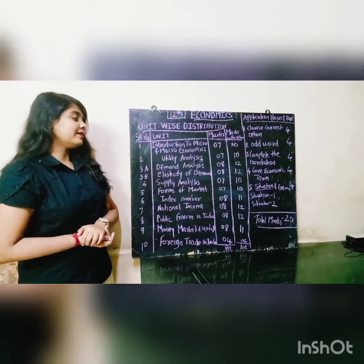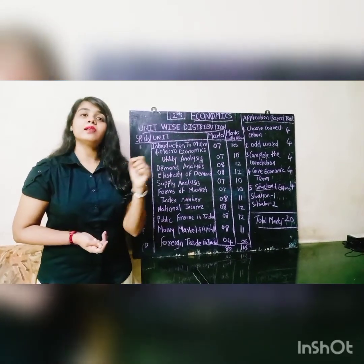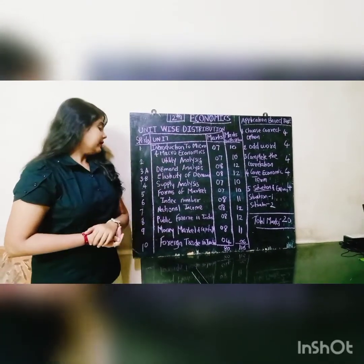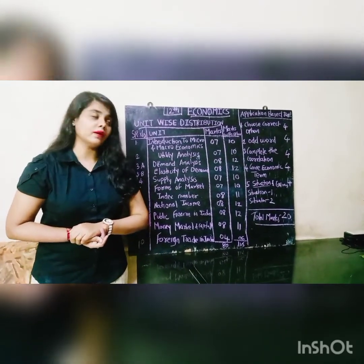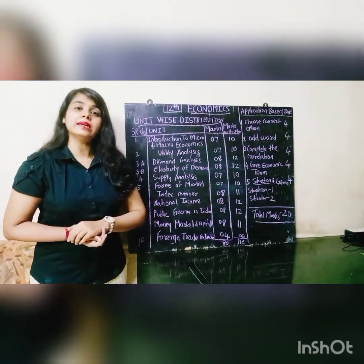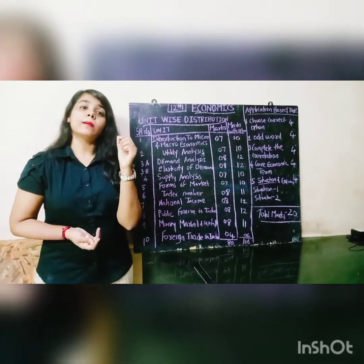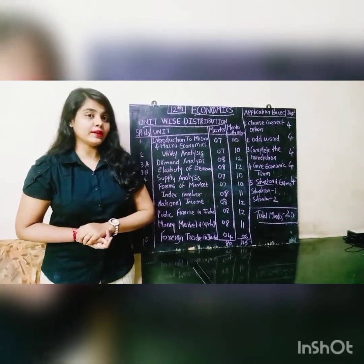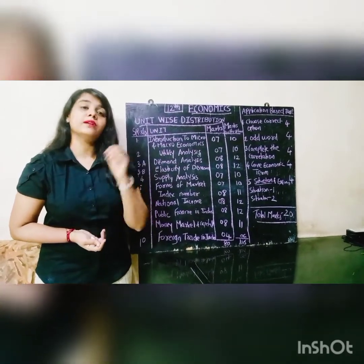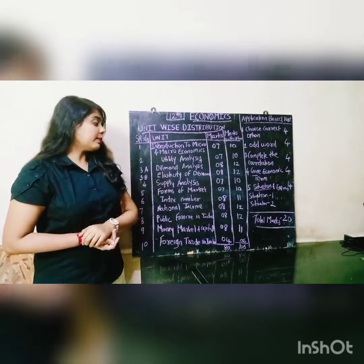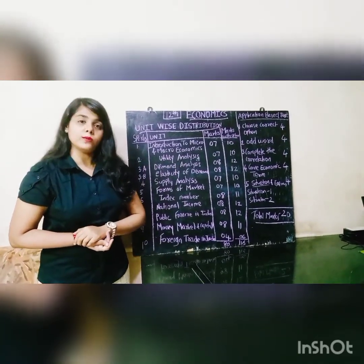Chapter number four — Supply Analysis — has compulsory marks of seven and marks with options are ten. Chapter number five — Forms of Market — has compulsory seven marks and marks with options are ten. Chapter number six — Index Numbers — is a new chapter this year in twelfth standard, with compulsory eight marks and eleven marks with options.